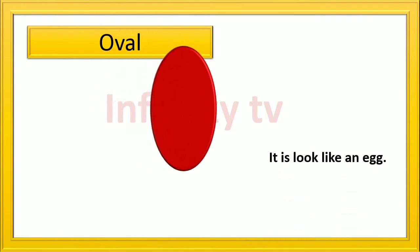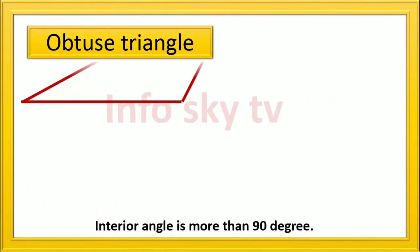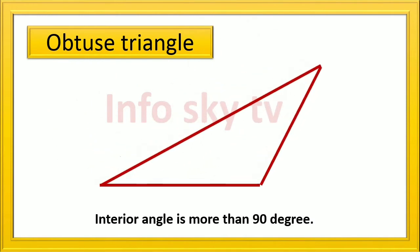Oval: it looks like an egg. Obtuse Triangle: interior angle is more than 90 degree.